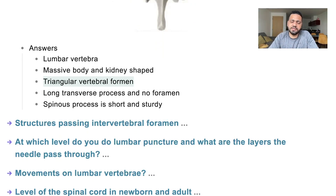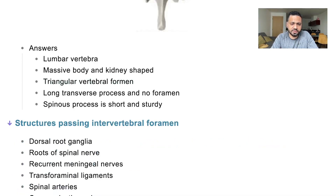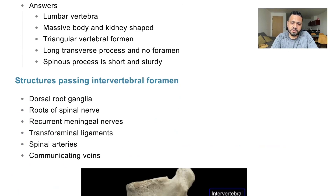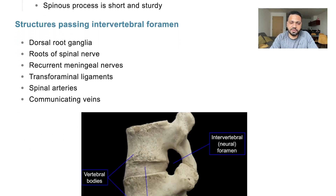Structures passing through the intervertebral foramen: we have the dorsal root ganglia, spinal nerve roots, recurrent meningeal nerves, the transforaminal ligament, spinal arteries, and communicating veins. I originally said five but there are in fact six structures.